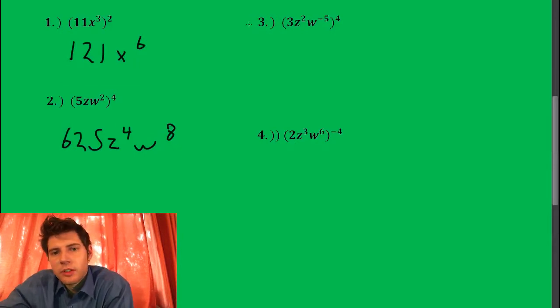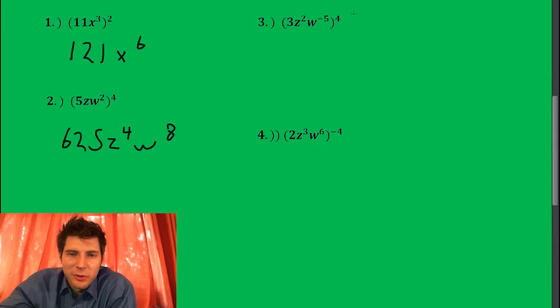So if you guys want to try this one you can pause it. I'll do it real quick. 3 to the fourth is 81, z two times 4 is z to the eighth, and this would be w to the negative 20.